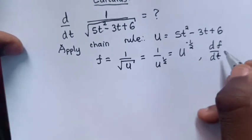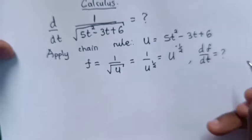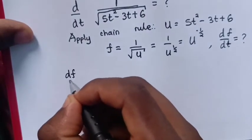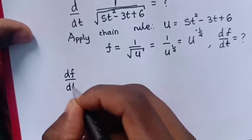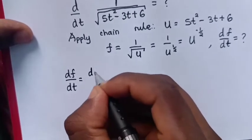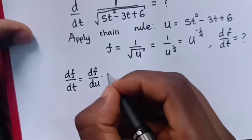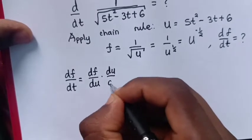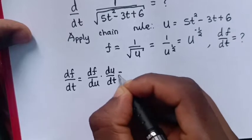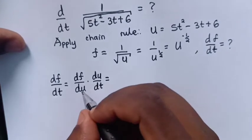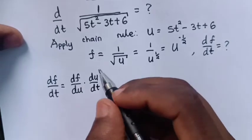Now, the formula for derivative of f with respect to t equals derivative of f over derivative of u times derivative of u over derivative of t, which equals derivative of f with respect to u.